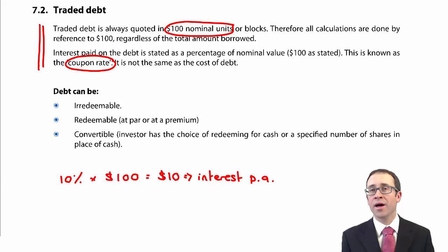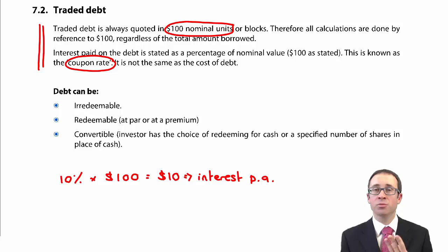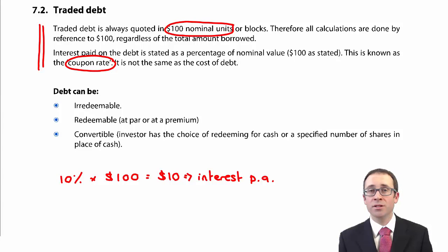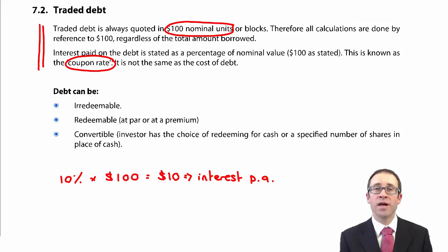We also need to think about the redemption value, but I will leave that until we come to look at redeemable debt a little bit later on. What I want you to take on board from here is that there are three types of tradable debt: irredeemable, redeemable, and convertible. You'll need to spot in a question which one it is. The debentures are traded in blocks of 100, and the coupon rate is multiplied by the $100 par value to work out the promised coupon interest paid each year. As we will see, that coupon interest of 10% is not the same as the cost of debt to the company, primarily because of the tax savings on interest.